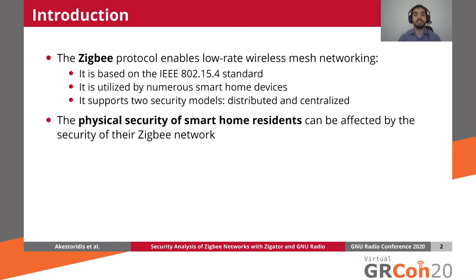Given that Zigbee devices typically interact with the physical world through sensors and actuators, it is important to ensure that they meet appropriate security goals because they can also affect the physical security of smart home residents. For example, consider a smart home with Zigbee-enabled door locks. If the Zigbee network is not properly secured, then an attacker may be able to unlock these door locks without proper authorization.